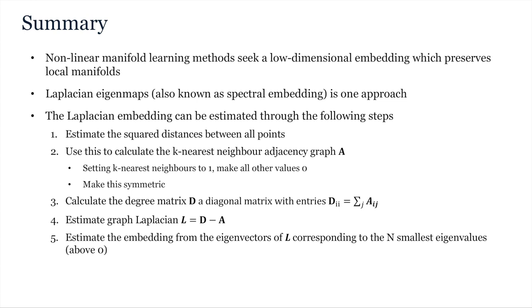Remember that non-linear manifold learning methods seek a low-dimensional embedding which preserves the geodesic distances along the manifold and that Laplacian eigenmaps, also known as spectral embedding, is just one such approach. In summary, the steps for achieving a Laplacian embedding are as follows. First, you must estimate the square distances between all points and then use these to calculate the k-nearest neighbour adjacency graph A, setting the k-nearest neighbours to 1 and making all other values including the values on the diagonal 0. You then must make this symmetric. From A, you then calculate the degree matrix D which is the diagonal matrix summarising the degrees or the total number of neighbours for each vertex. From A and D you can then estimate the graph Laplacian. Finally, to retrieve the embedding, all you need to do is estimate the eigenvectors of the Laplacian corresponding to the n smallest eigenvalues above 0.